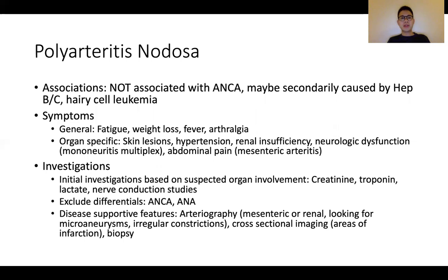Moving on to the medium vessel vasculitis, polyarteritis nodosa is one of those conditions. It is not uncommonly associated with, but can sometimes be secondarily caused by, hepatitis B or C, or some hematological malignancies such as hairy cell leukemia. The clinical features can be quite non-specific such as fatigue, weight loss, fever, and arthralgias. One important consideration would be mononeuritis multiplex — a fairly common feature. Patients can get GI or renal problems such as mesenteric arteritis and renal insufficiency. Investigations should be targeted at organ involvement based on symptoms, including creatinine, troponin, and nerve conduction studies. ANCA and ANA are mainly to look for differentials, and arteriography as well as relevant biopsy of the affected areas would be investigations of choice.